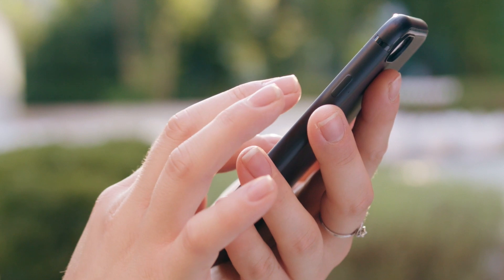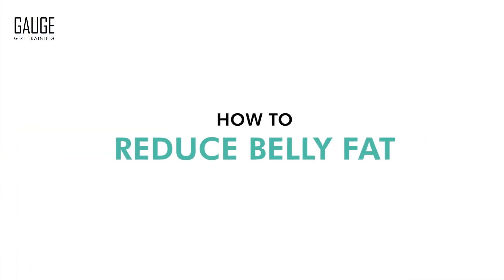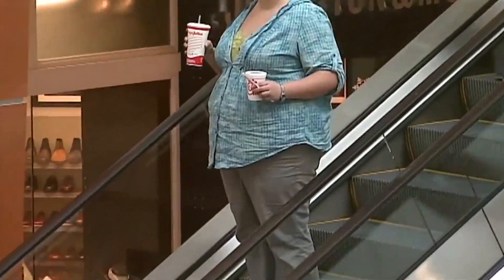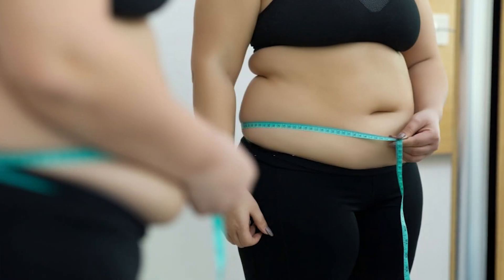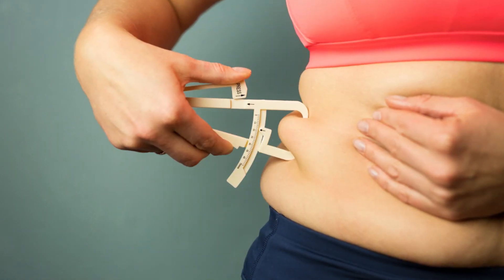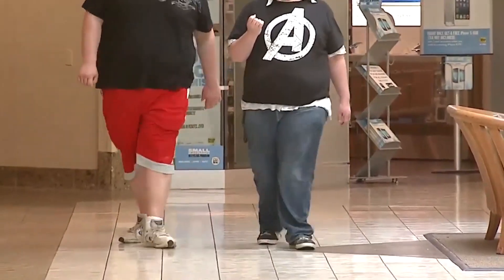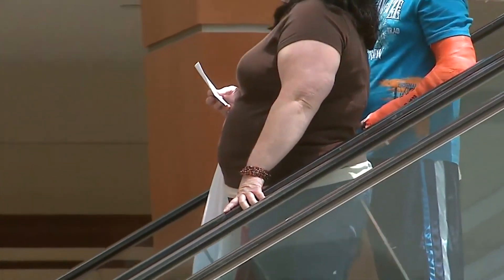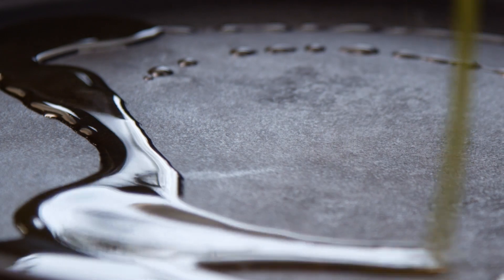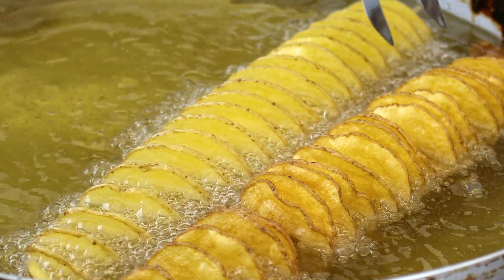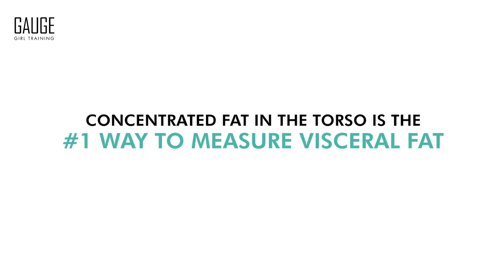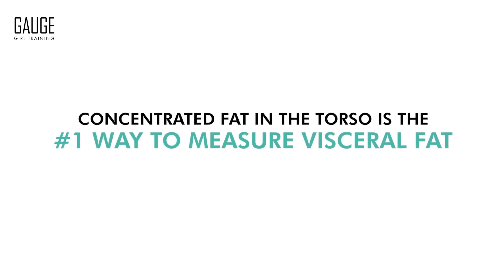One of the biggest requests I get all the time is how to reduce belly fat. Abdominal obesity is crudely measured by the waist measurement, and it tends to be a sign of the accumulation of visceral fat. According to a 2013 study in the Archives of Medical Science, visceral fat is composed of biologically active fat cells that actually secrete hormones and inflammatory molecules. These hormones actually disrupt your body's natural patterns for processing dietary fats as well as carbohydrates. Concentrated fat in the torso is the number one way to measure visceral fat.